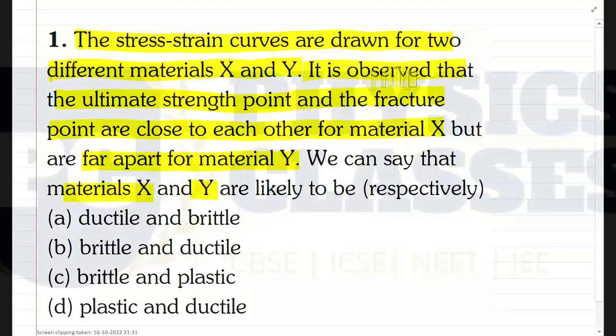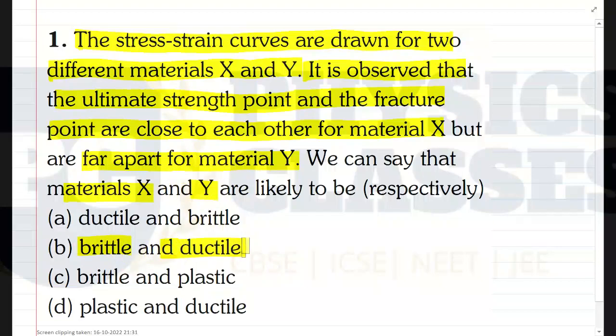If the fracture point and ultimate strength point are close to each other, the material will be brittle. If these points are far away, the material will be ductile. So material X is brittle and material Y is ductile.